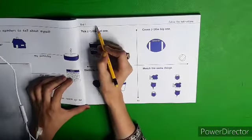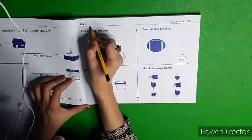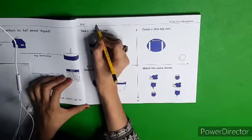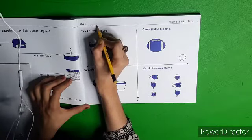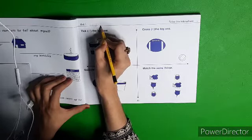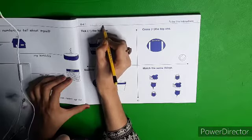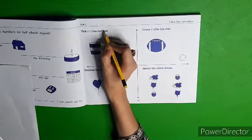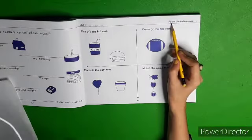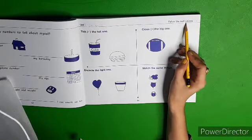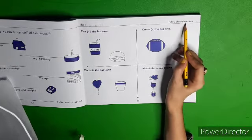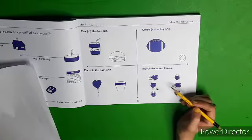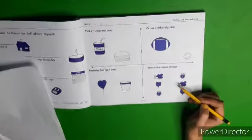First, we write down the date here — 24th June 2020. So dear children, you have to start your work and write the date. Follow the instruction. This page has been given instructions, and we are going to complete this page.